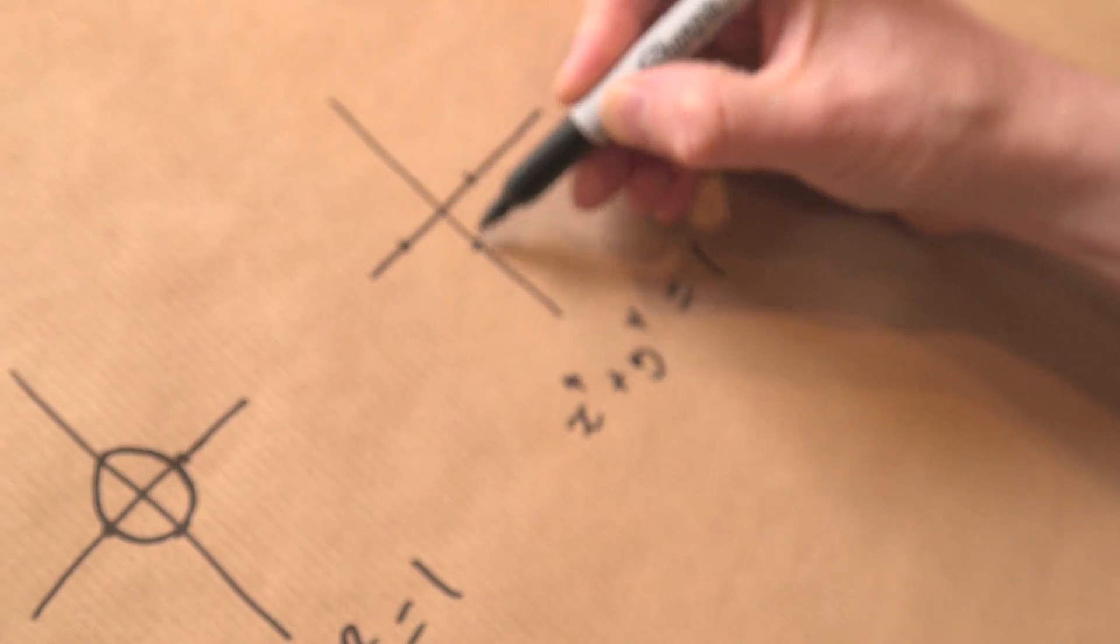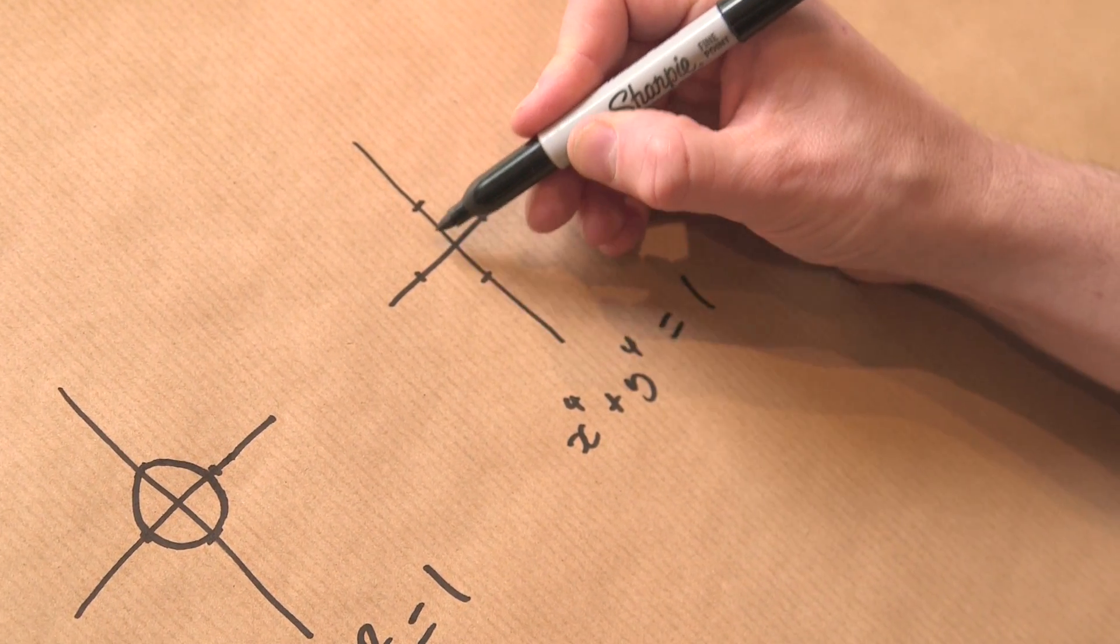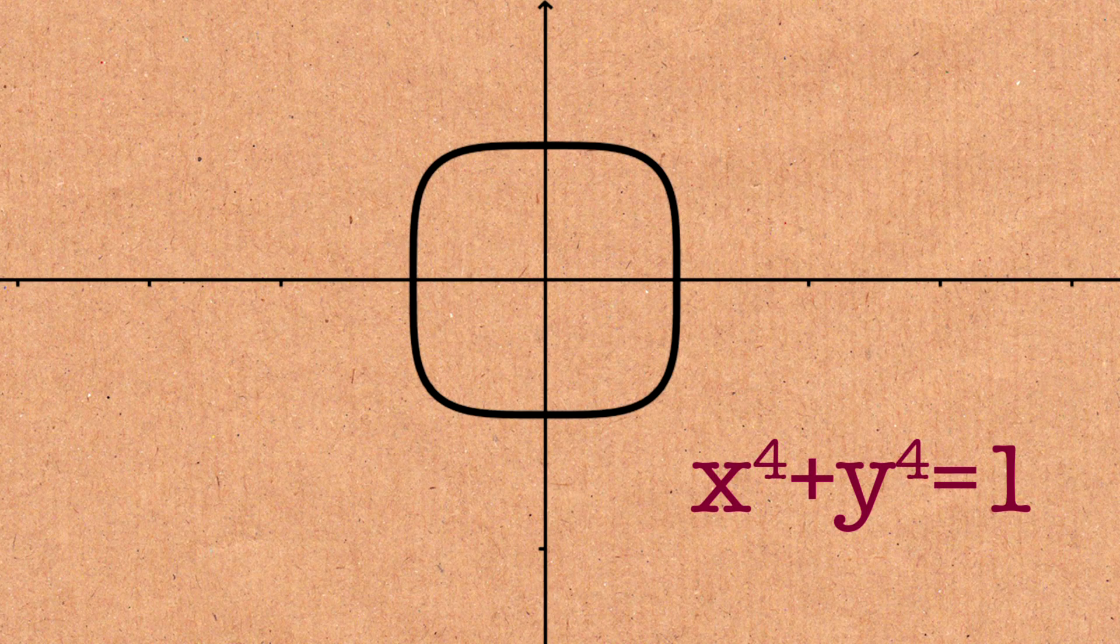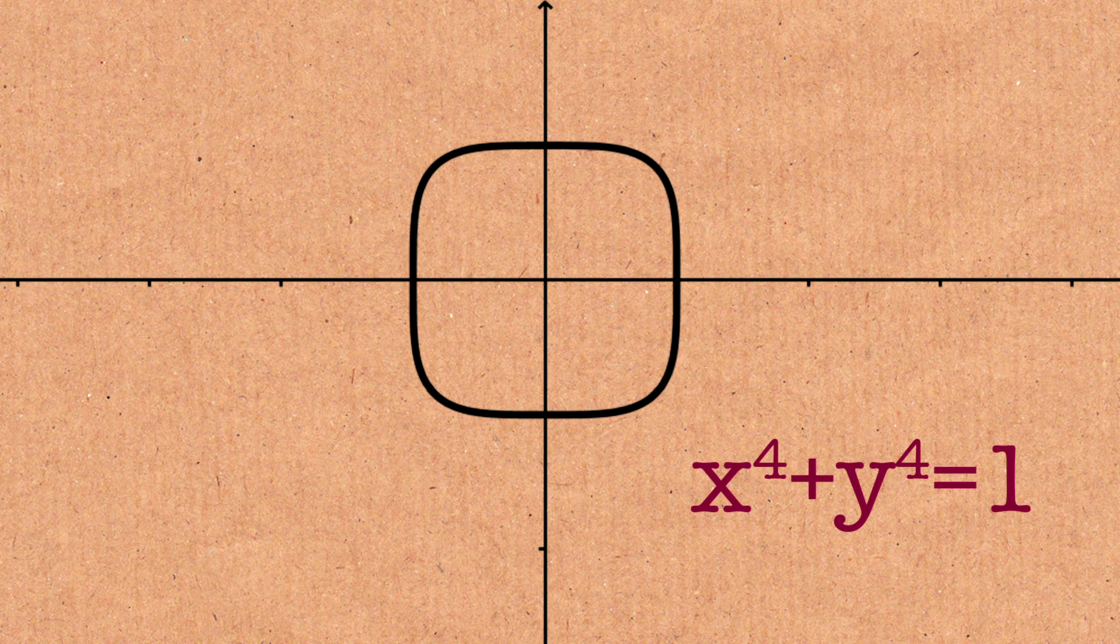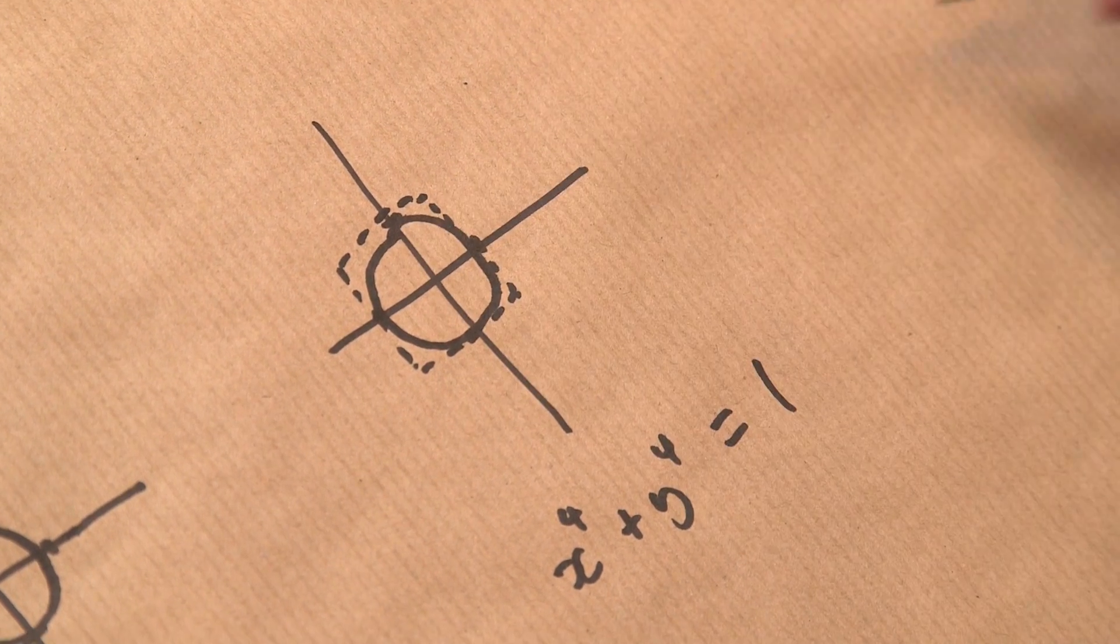What this turns into, and these are actually called Lamé curves, is that it gets a little bit fatter. It's a little bit fatter. It's like it's becoming a square. So if we did the square, this is the square, it's becoming a little bit towards it.